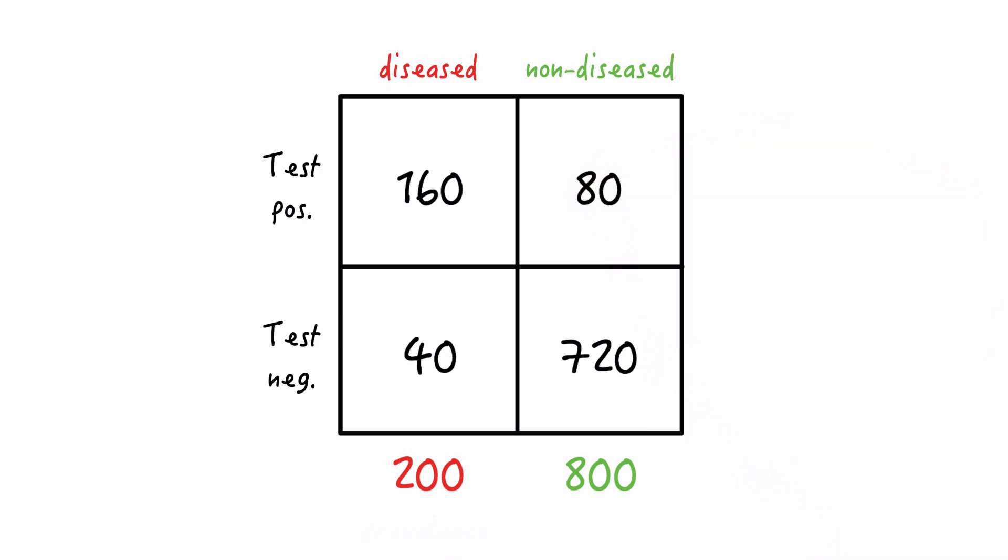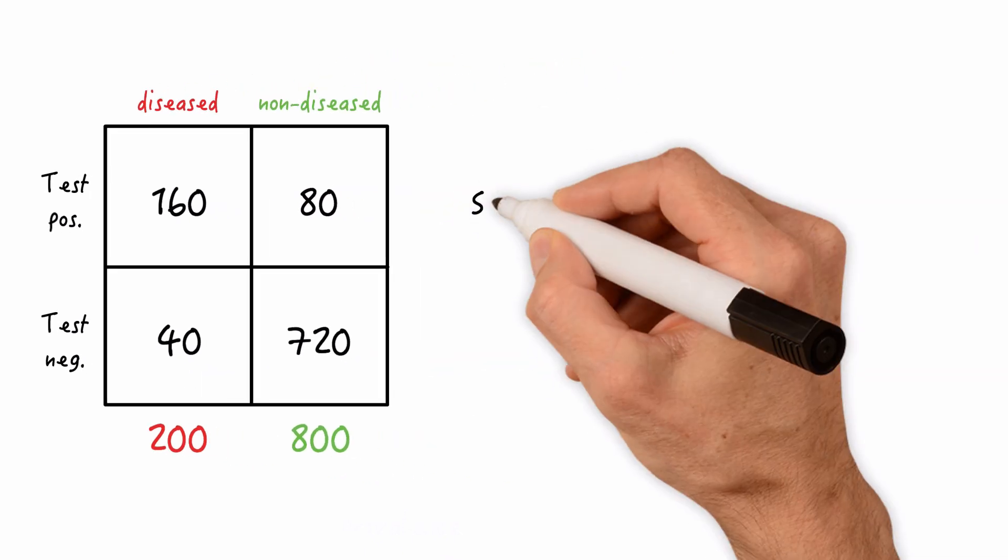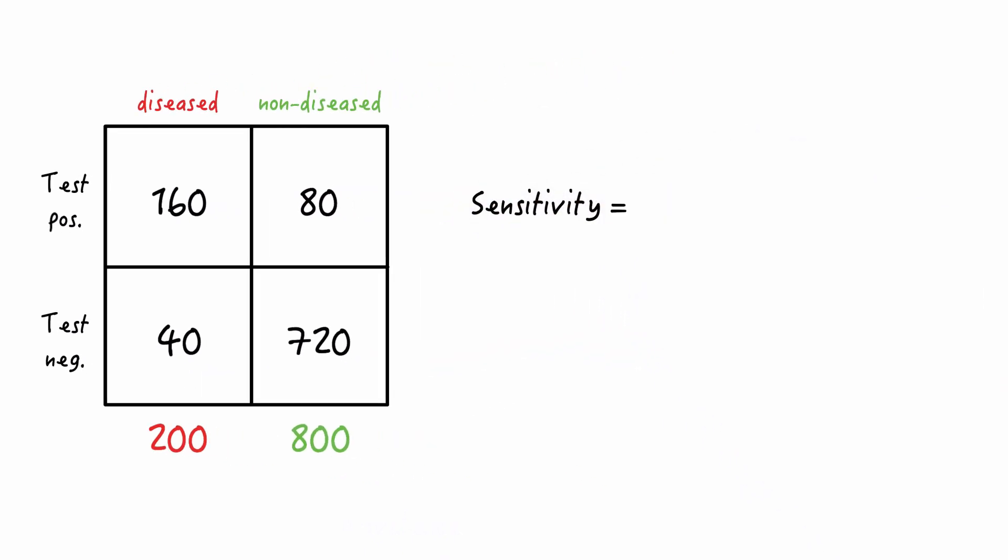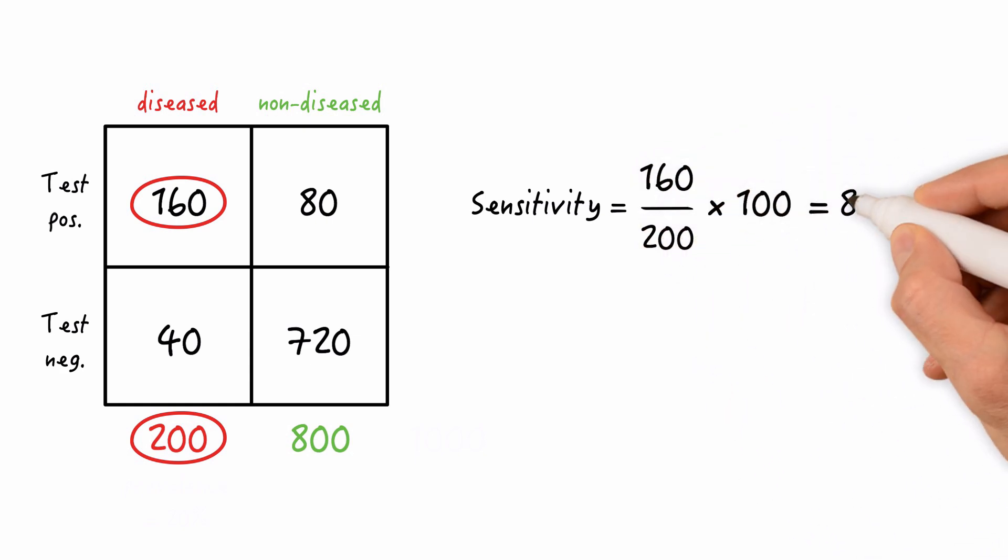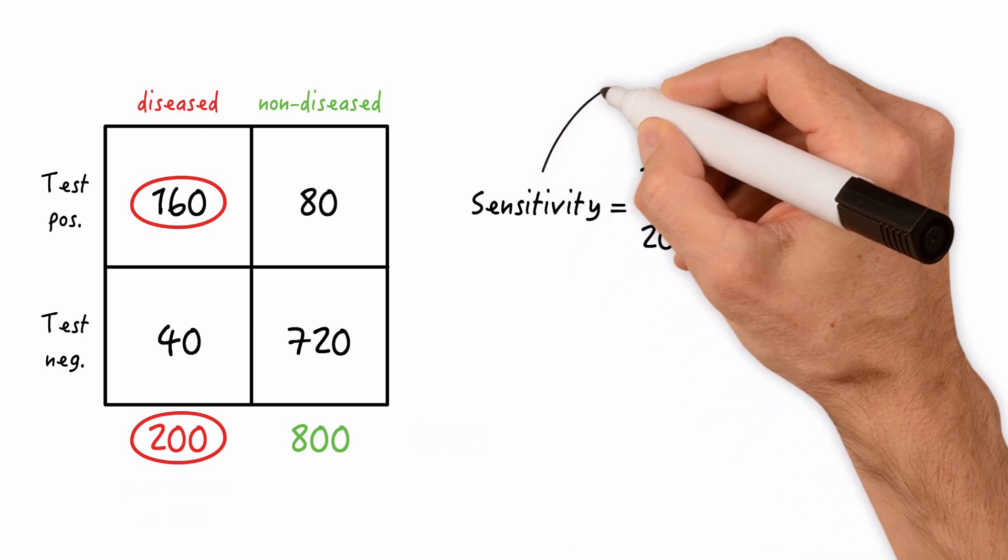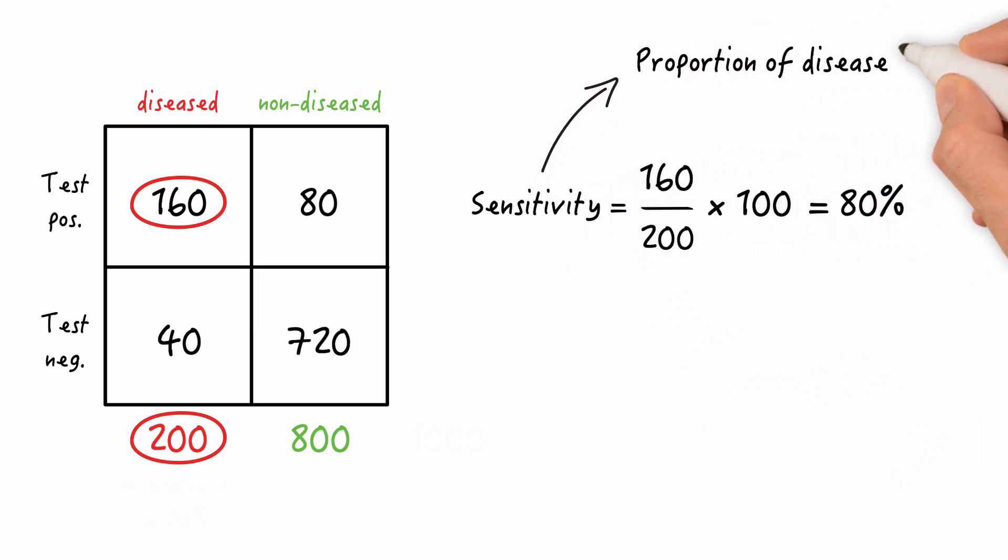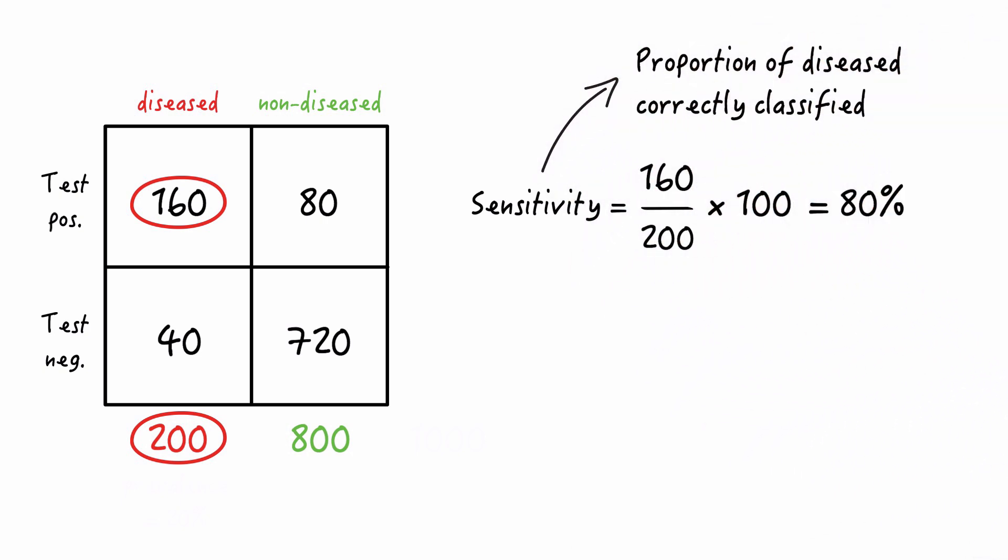The sensitivity of that test is calculated as the number of diseased that are correctly classified divided by all diseased individuals. So 160 divided by 200 times 100, and that equals 80%. In other words, the sensitivity is the proportion of diseased individuals correctly classified, and that's 80% in this case.